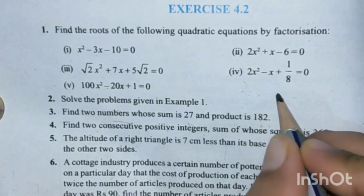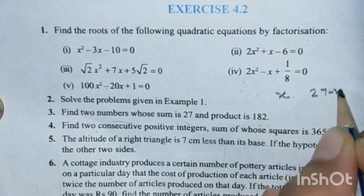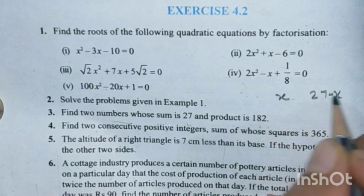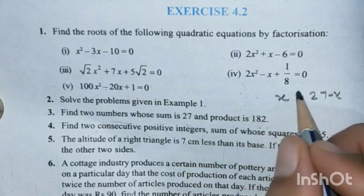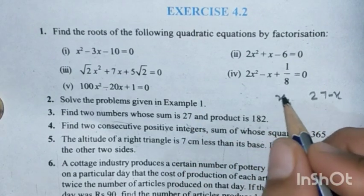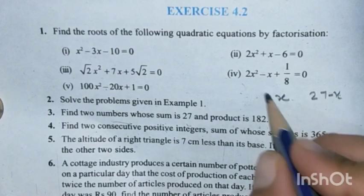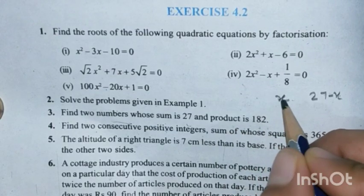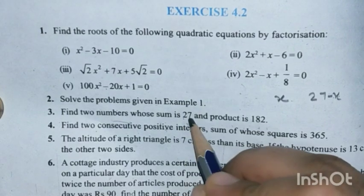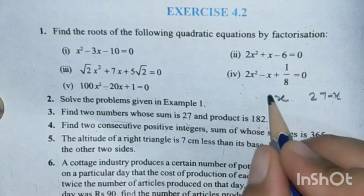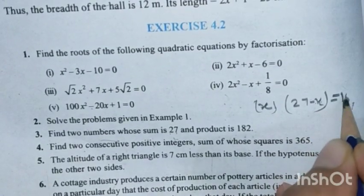We need to find two numbers such that adding them gives 27 and multiplying them gives 182. This is quite easy. If one number is x, the second number is 27 - x, because x + (27 - x) = 27. So the two numbers are x and 27 - x. The second condition: their product equals 182, so x(27 - x) = 182.